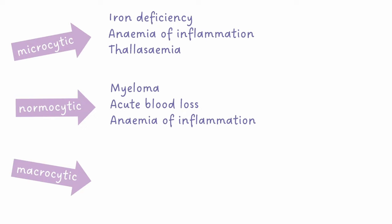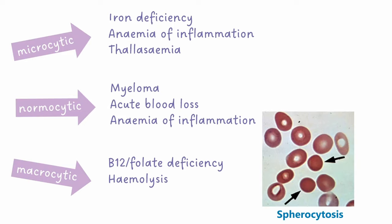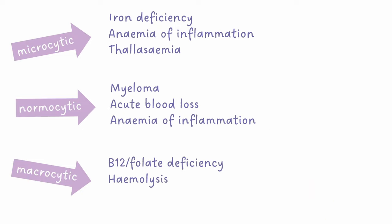Macrocytic anaemias are linked with B12 and folate deficiency. Haemolysis, which is the degradation of red blood cells, can be caused by infection, autoimmune haemolysis, or a condition called spherocytosis, where the red cells are spherical rather than concave shaped. Chronic alcohol consumption and hypothyroidism can also cause macrocytic anaemia.